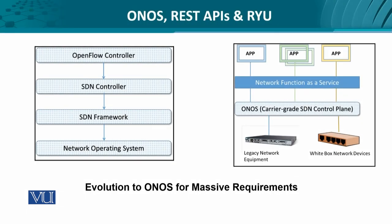This is how the journey has been made from the OpenFlow controller to the network operating system. On the left-hand side, you can see the progression from OpenFlow controller to SDN controller to SDN framework and to an entirely network-based operating system. On the right-hand side, ONOS abstracts the underlying legacy equipment and white box networking devices — known as forwarding elements — providing seamless access to network functions as a service, similar to cloud services. This is the evolution for massive carrier-grade requirements.